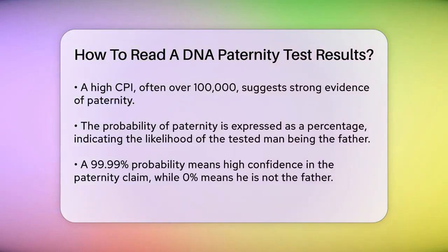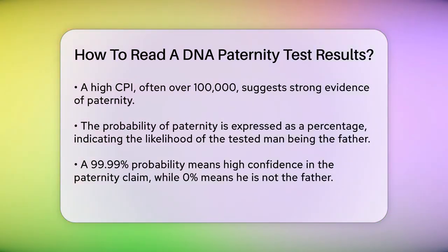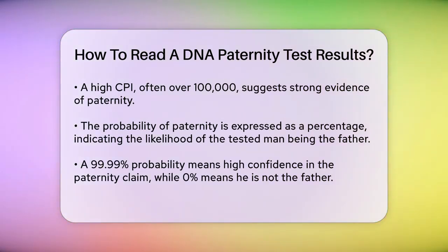The combined paternity index, or CPI, is another crucial part of your results. This number tells you how many times more likely it is that the tested man is the biological father, compared to a random man from the same ethnic background.